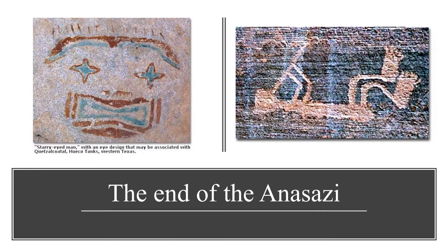While the Anasazi built spectacular settlements, their dependence on agriculture made them vulnerable to changes in the climate, which, combined with threats from other warring Native Americans, caused their culture to disappear around the year 1300 of the Common Era. The Anasazi's reliance on agriculture actually made them, in some ways, more vulnerable than hunter-gatherer societies, which could have migrated to regions with more abundant food resources in a time of climate change.